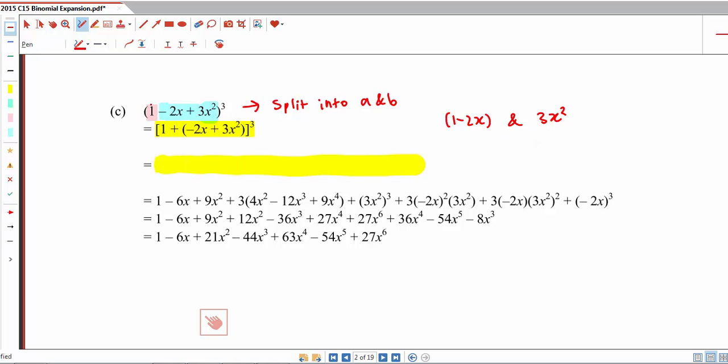Actually you can, but the simpler way would be to split this into 1 and something else. Because when you take 1 to the power of anything, you'll still get 1, which simplifies our working. So if we apply our binomial expansion formula here, this is what we will have. 1 is from our 3 choose 0, this is 3 choose 1, 3 choose 2, and so on. So what remains is actually to expand them and simplify.